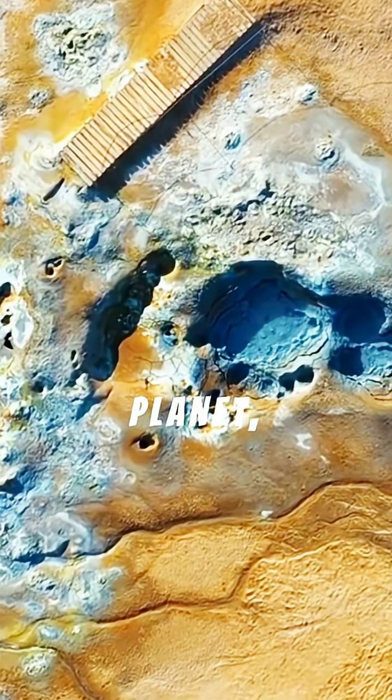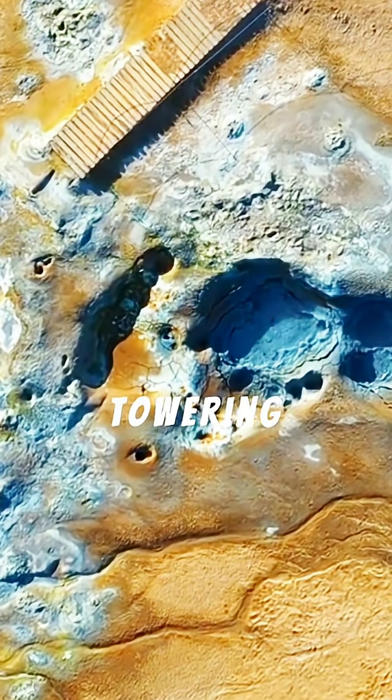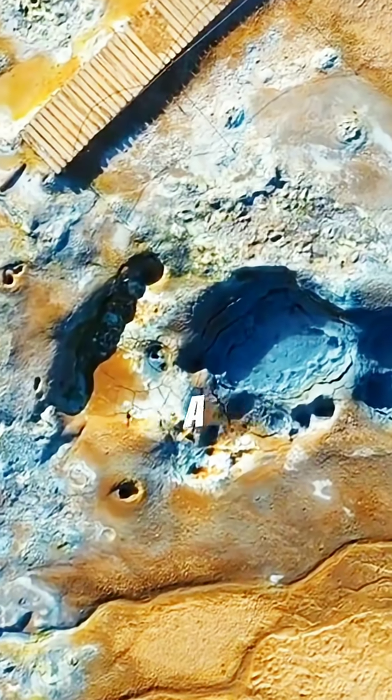Next, Mars, the red planet, presents a cosmic painting of towering volcanoes in orange deserts, where even sunsets glow a haunting blue.